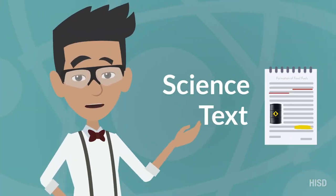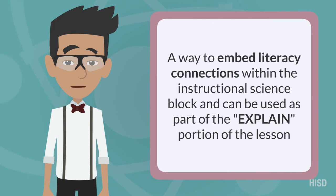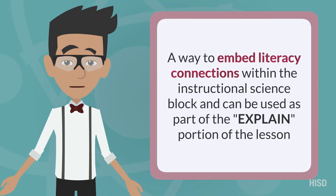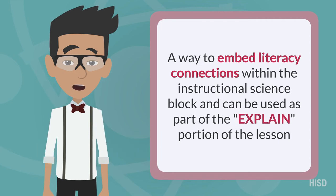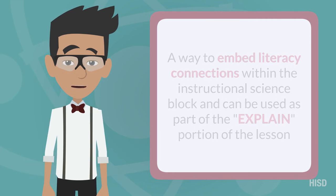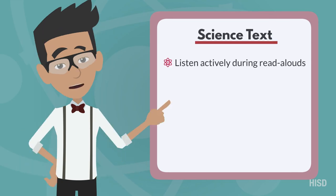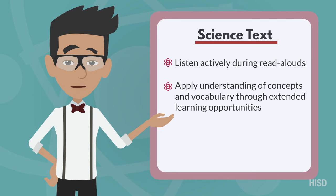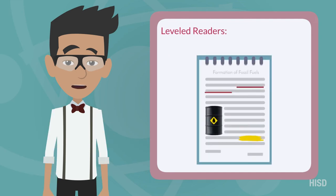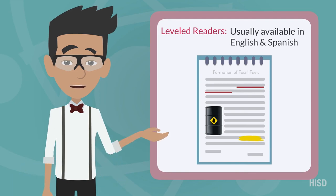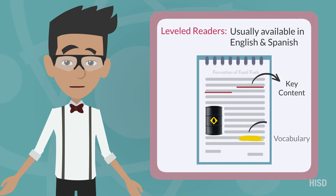We can also implement science text for this explore activity. Using science text is a way to embed literacy connections within the instructional science block and can be used as part of the explain portion of the lesson. This will allow students to listen actively during read-alouds, apply understanding of concepts and vocabulary through extended learning opportunities, and use text for science research to solve problems and generate questions. It's a good idea to use leveled readers, usually available in English and Spanish — key content is underlined, vocabulary words are highlighted, and visuals are included.